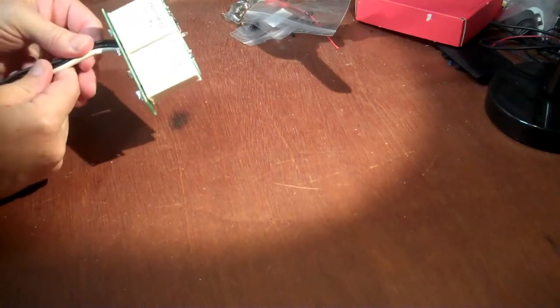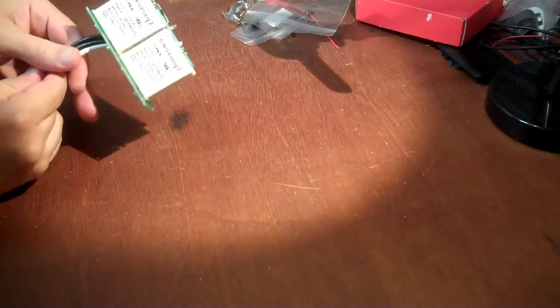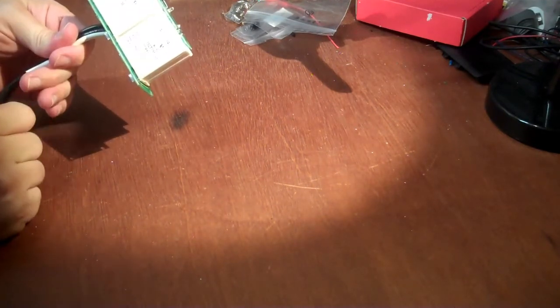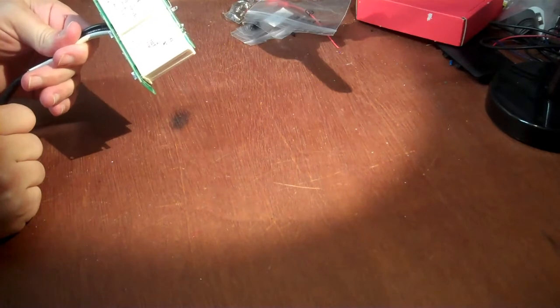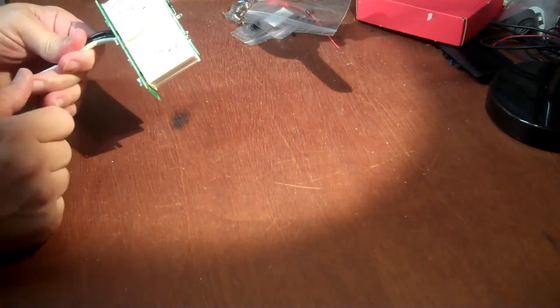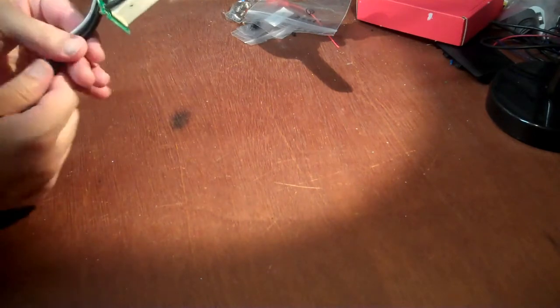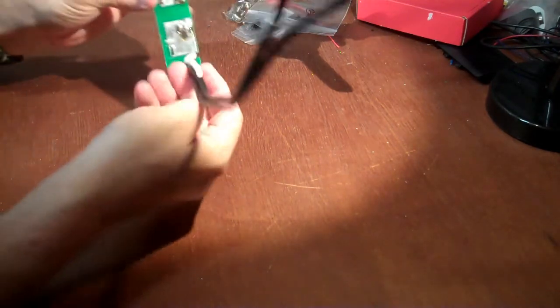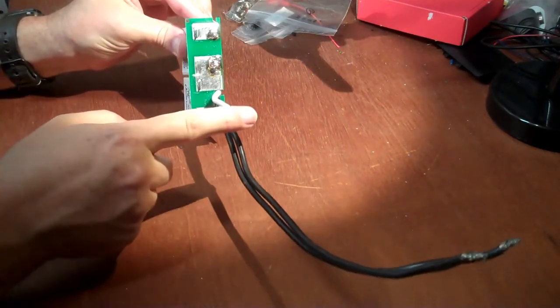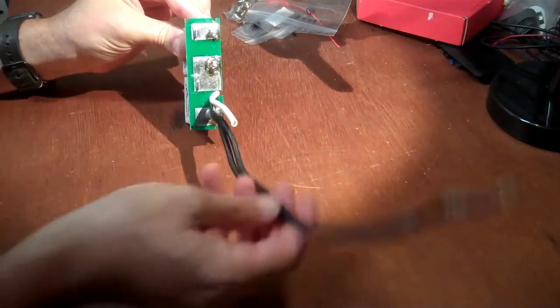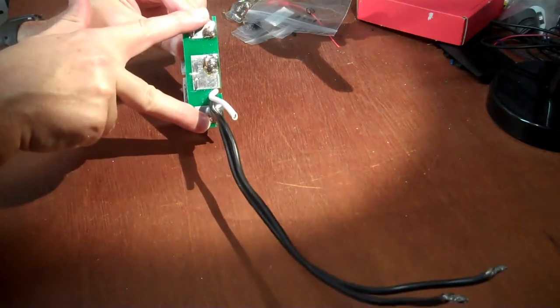All right, there we go. So what's inside this surge arrestor is quite simple. There's two of these and that's what does all the work. They're MOVs, thermally protected MOVs, which is a metal oxide varistor. And essentially, if you look at how they're wired up, you have the neutral line going to the center and your two hots going to either side here.